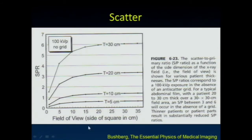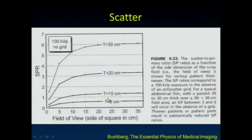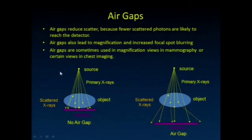They opened the field of view to different sizes and measured the scatter-to-primary ratio. With a very small five-centimeter phantom, even as the field of view got bigger there wasn't a lot of scatter—so for pediatric patients and small parts, scatter is not a huge issue. For larger patients, getting the field of view as small as possible becomes very important to keep the scatter-to-primary ratio down.